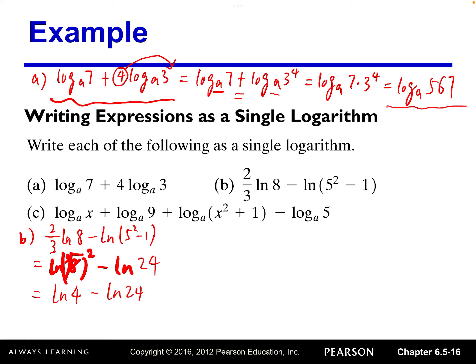So we write ln of four minus ln of 24. Subtracting two logs, we can write this as a quotient — that's ln of four over 24, which simplifies to ln of one-sixth. One-sixth is six raised to the negative one power, so the negative one comes out and we write negative ln of six.